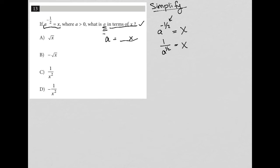Half power is the same as a square root, so this is the same as one over the square root of a equals x. Now I want to get a by itself, so I'm going to multiply both sides by square root a because I don't want a in the denominator. Now I'm left with one equals x root a.